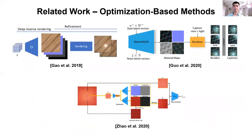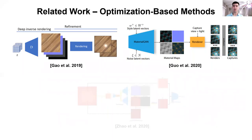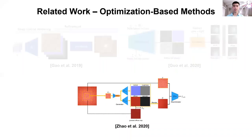The second type of methods are optimization-based approaches. These methods find optimal material properties by minimizing the loss between the re-rendered image and input images. Since the problem is highly ill-posed, they constrain optimization to converge to reasonable feature maps. For example, Gao performed optimization in the latent vector of a neural network. On the other hand, Zhao constrained the problem by enforcing the estimated diffuse map to be close to an initially guessed map.